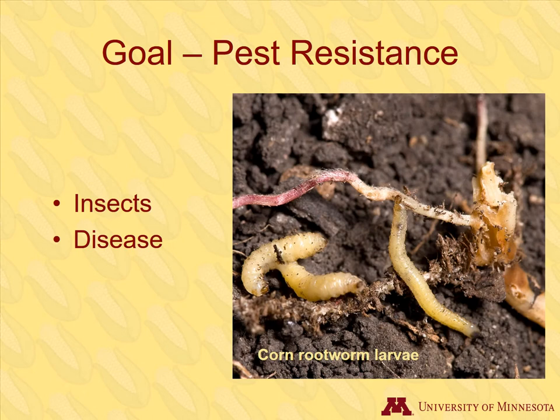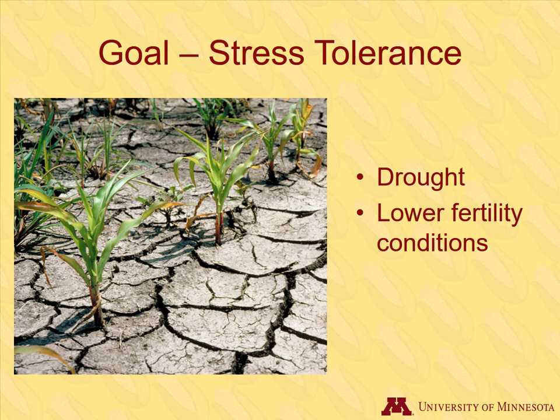Corn is susceptible to many different insect pests and diseases. Breeding can make plants less vulnerable to pests. Pictured are corn rootworm larvae, which feed on the roots of corn and cause great damage to the plants. Corn uses a lot of water and fertilizer as it grows. Some breeding efforts are devoted to increasing corn's tolerance to drought and to soils that are less fertile.